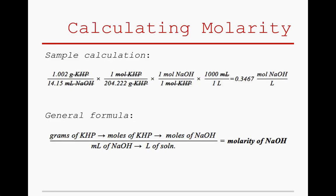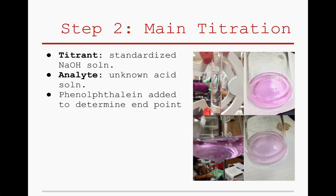Now that the NaOH has been standardized, it is time to move on to the lab's second titration — that of the acid. Because the molarity of NaOH is known, it assumes the role of titrant. The analyte, on the other hand, is played by the unknown acid, whose molar mass has yet to be determined. Procedural steps for this second titration mirror those of the first. Roughly 1 gram of the unknown acid is measured and dissolved in 30 milliliters of water. 25 milliliters of the standardized NaOH are placed in the burette. Then, after 3 drops of phenolphthalein have been added to the analyte, the acid is titrated until the endpoint. The appropriate volumetric measurements are seen in the following data table.